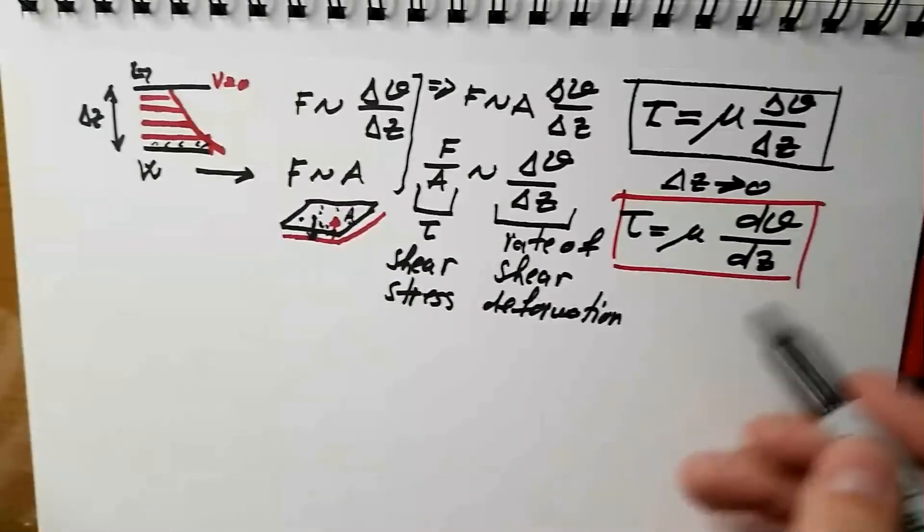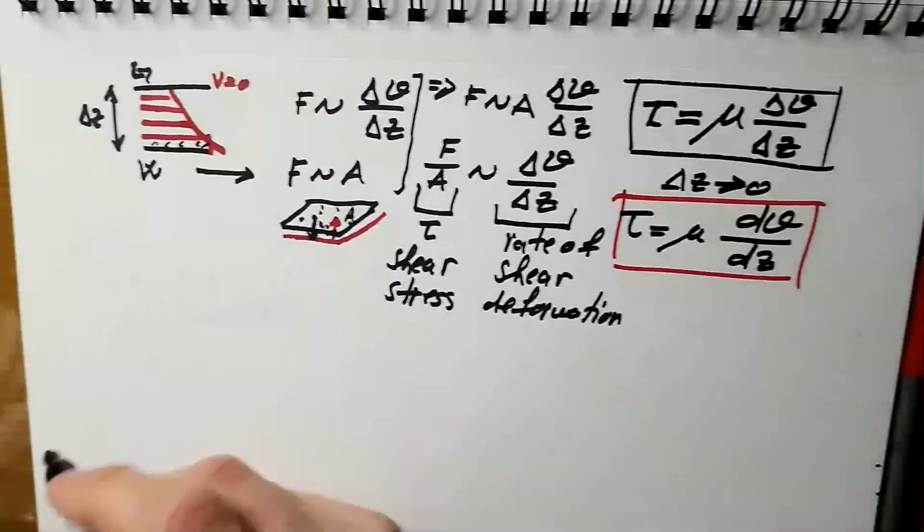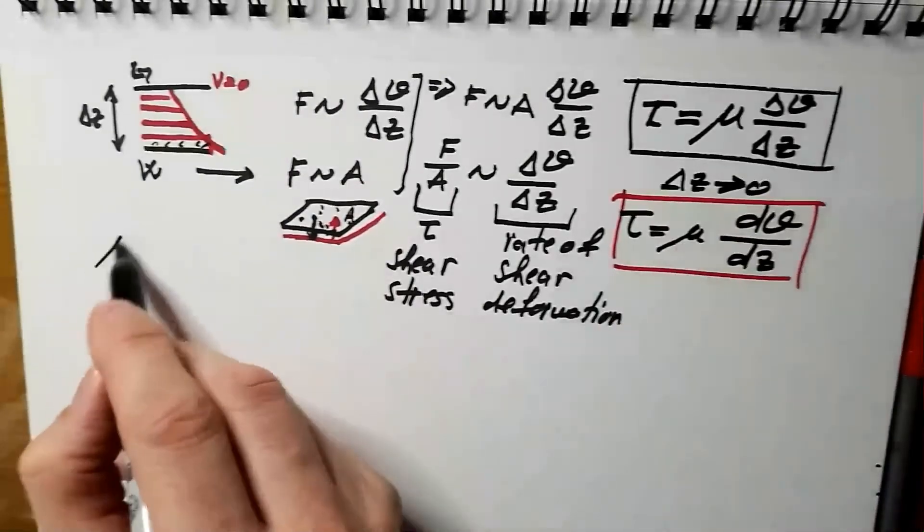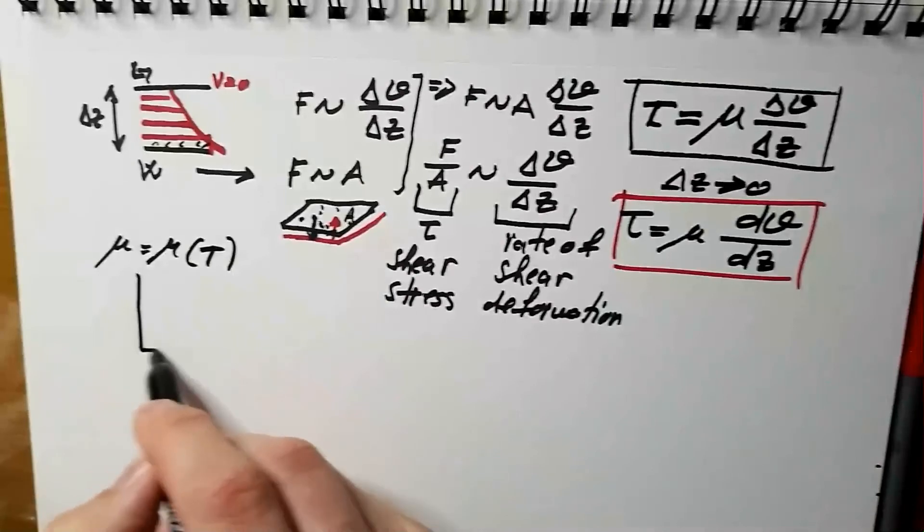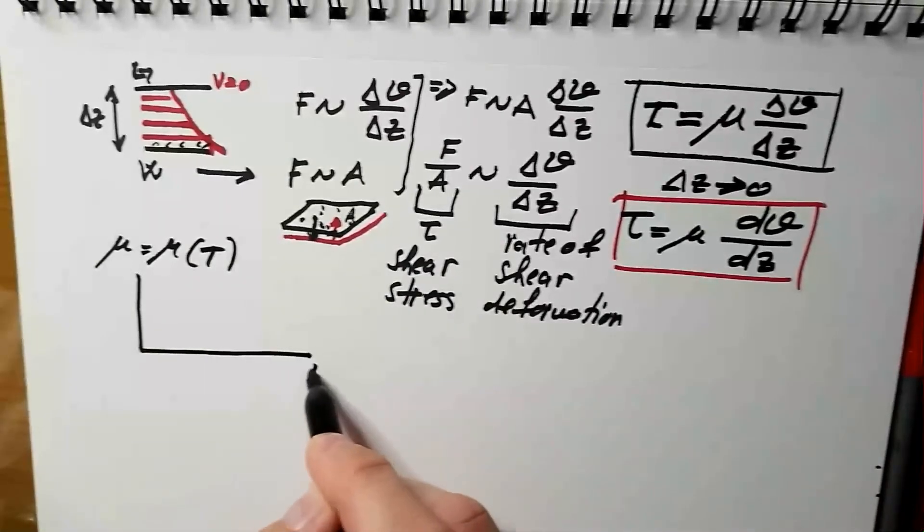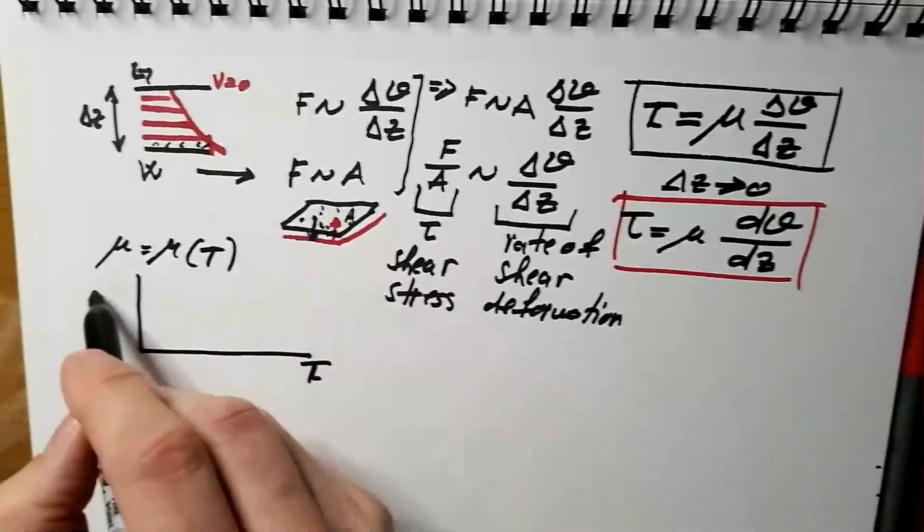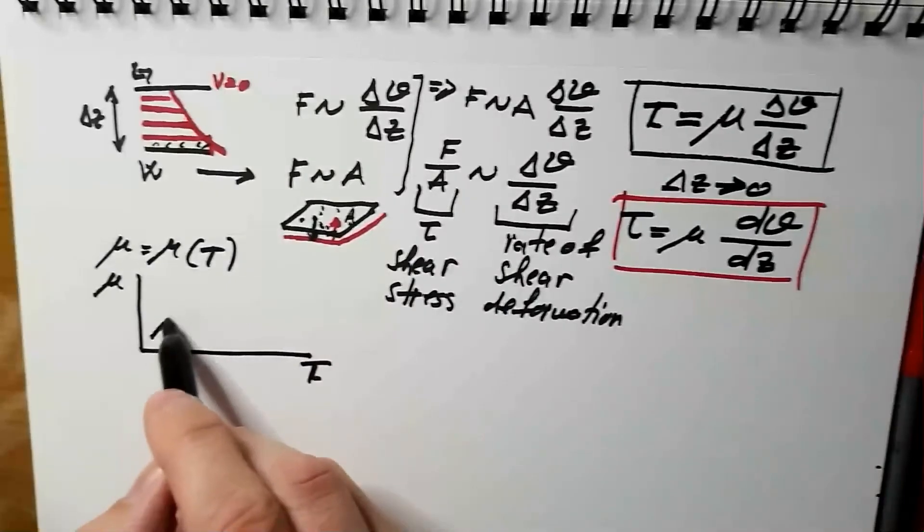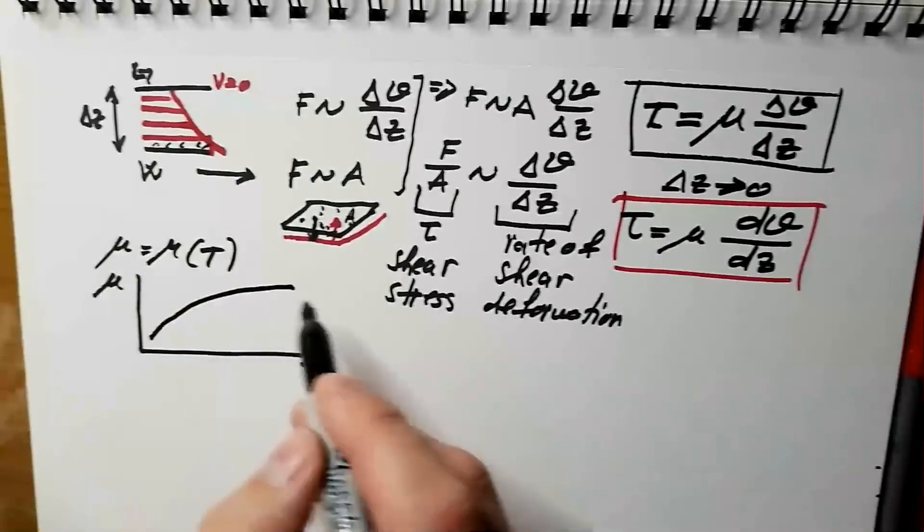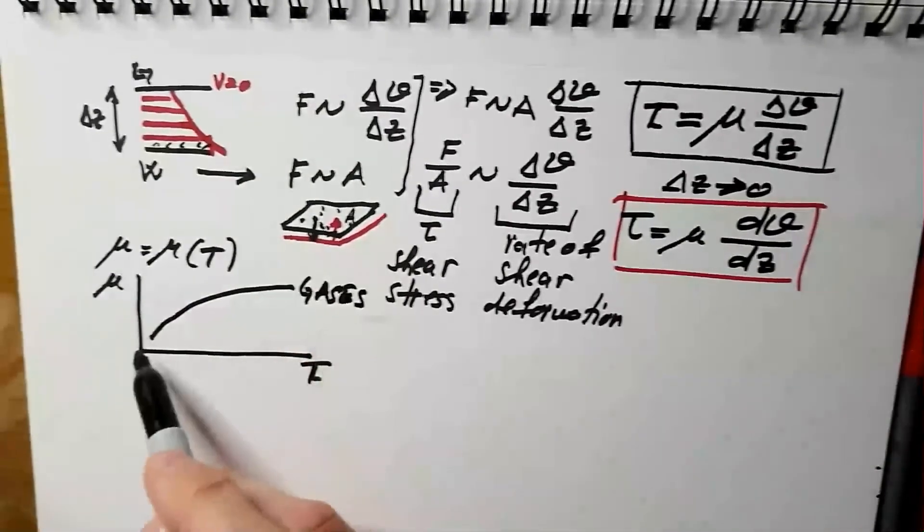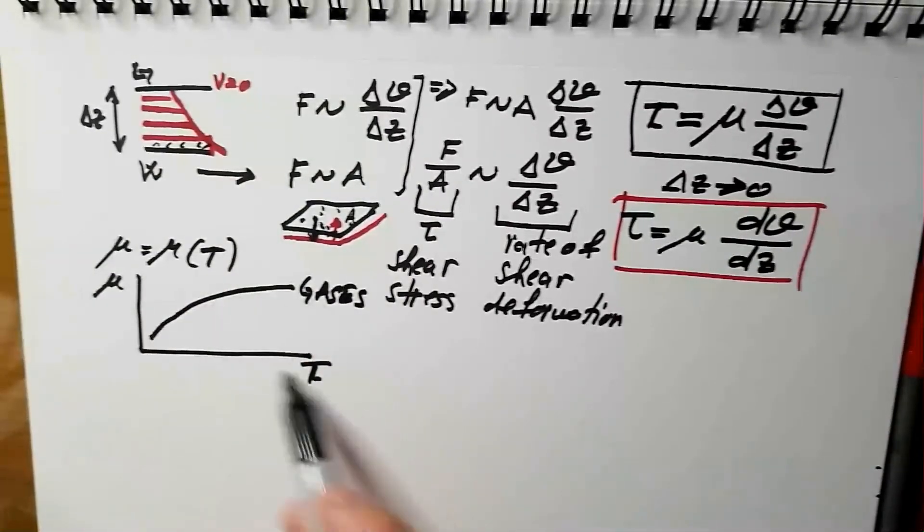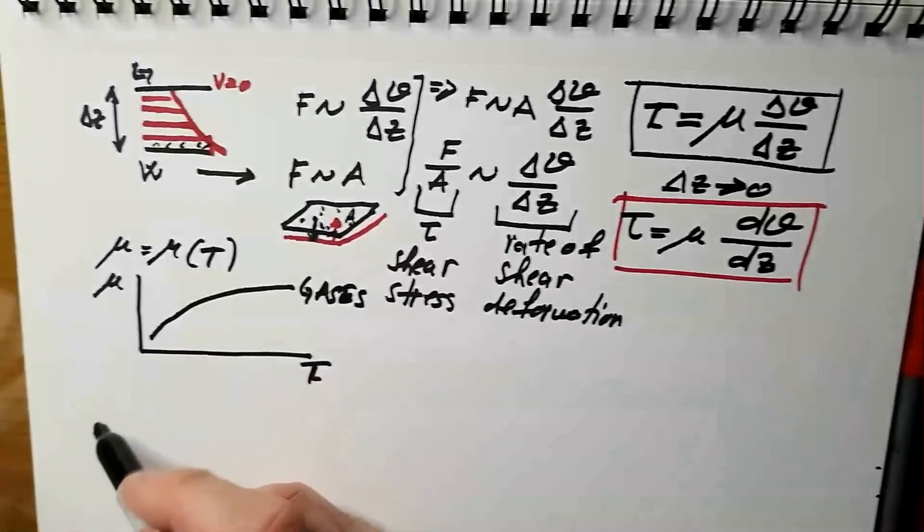Okay, I would like to also tell you that this mu is function of temperature in the following way. If I plot here temperature in Kelvins, and here mu, then, as I am increasing temperature, mu is increasing for gases, such as air. So, in our atmosphere, as I increase temperature, the viscosity of air increases.